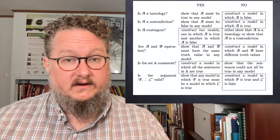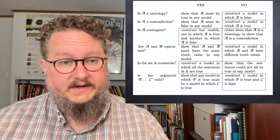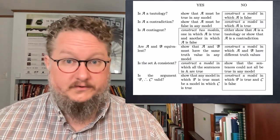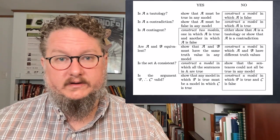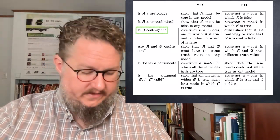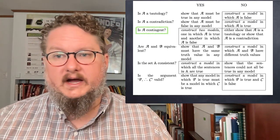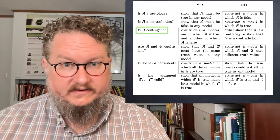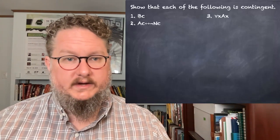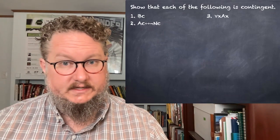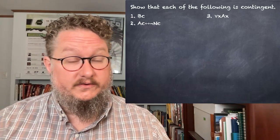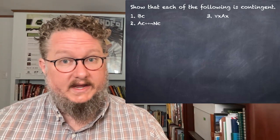Remember this chart from our last lecture — it helps us know what kind of reasoning using models to do. It lets us know whether we need to construct a specific model or two models, or whether we need to engage in reasoning about any possible model. To show that a sentence is contingent, we have to construct two models: one in which it's true and another in which it's false.